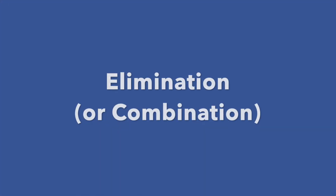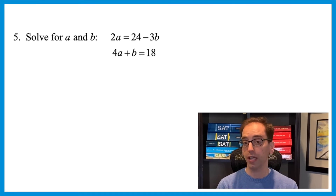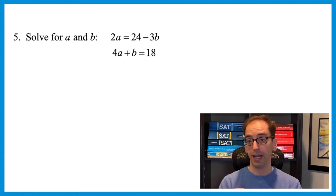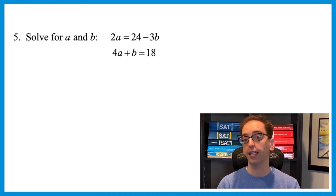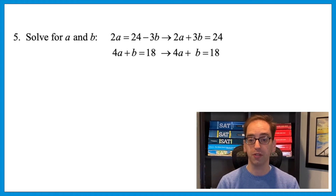There's another approach that's particularly popular on both tests, especially the SAT: elimination, also called combination. Let's look at the same a and b question again. The first step is to rewrite equations so like variables are stacked on top of each other — a over a, b over b, numbers over numbers. We can do that by moving negative 3b to the other side of the first equation, giving us 2a plus 3b equals 24, then stack the second equation underneath.